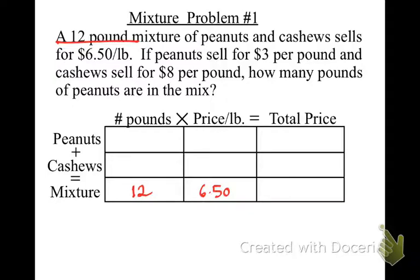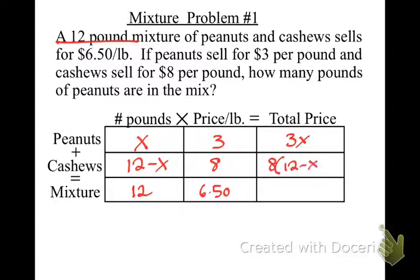That's the price of the combo. The peanuts are cheap — they're $3. The cashews are more expensive. So I'm taking something really expensive and something cheap and mixing them. Do we know how many peanuts? We call it X. Do we know how many cashews? What can we call it in relation to peanuts and the mixture? 12 minus X. And now we multiply across: 3X and 8 times the quantity of 12 minus X equals 78.